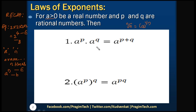The first law is: a to the power of p multiplied by a to the power of q equals a to the power of p plus q. When the bases are the same, we can add the powers.